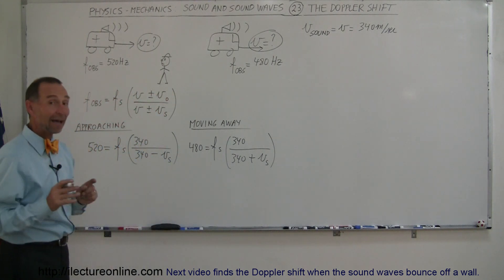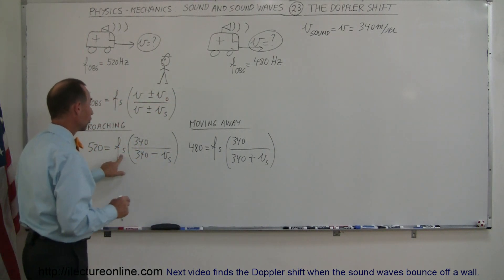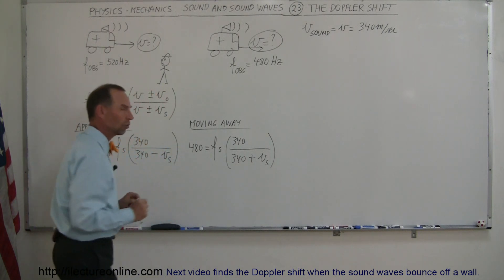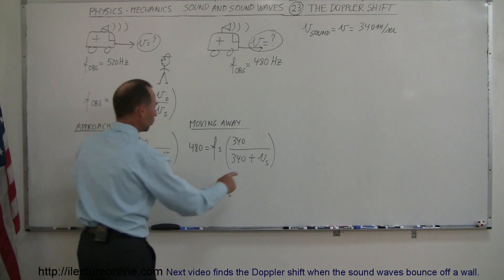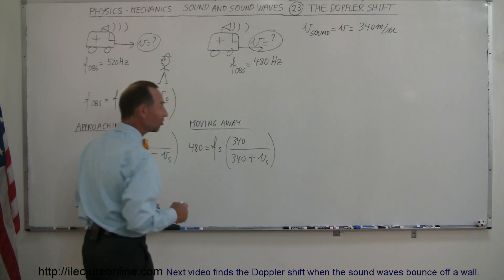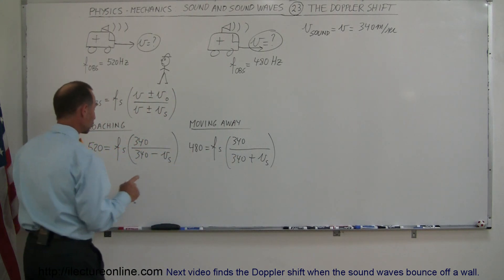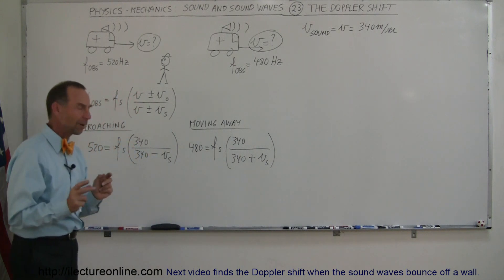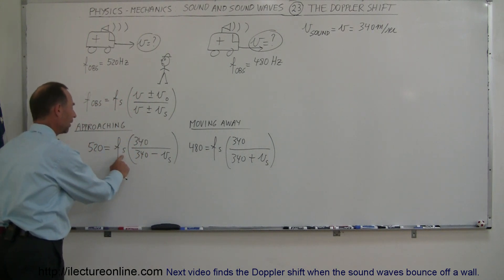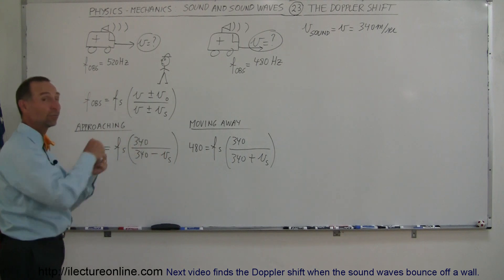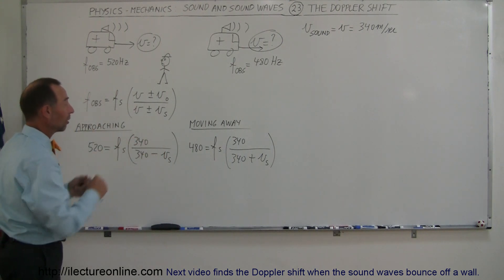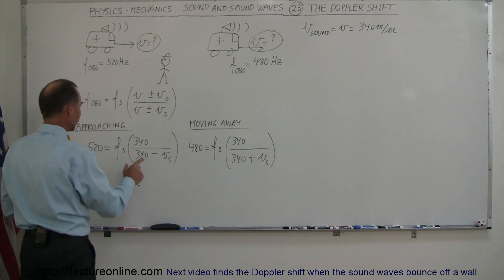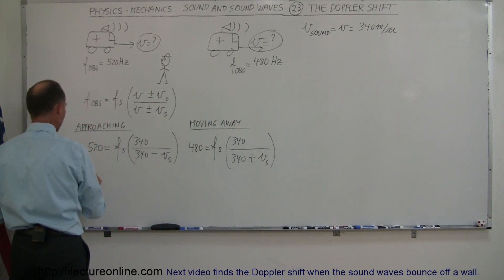Now we have two equations with two unknowns: the frequency of the source and the velocity of the van. To solve them simultaneously, we'll eliminate the frequency of the source by solving each equation for that frequency and then setting the two expressions equal to each other, leaving only the velocity of the source to solve for.